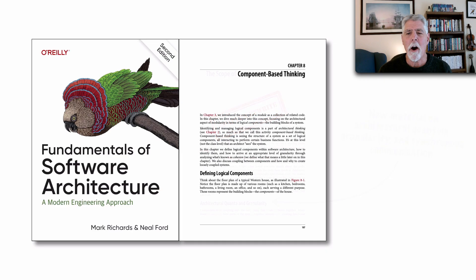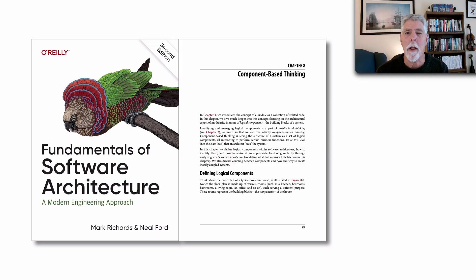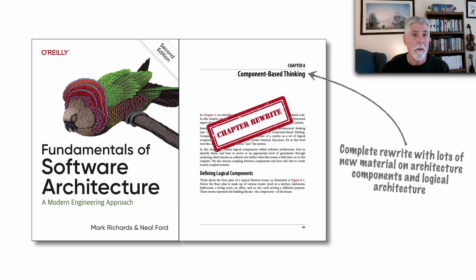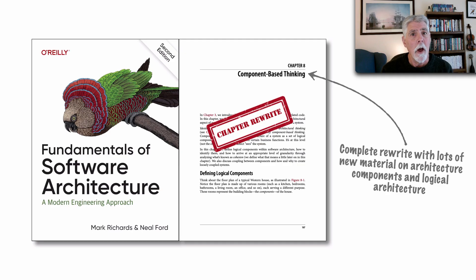Moving on to chapter 8, we shift away from architectural characteristics and start on component-based thinking. This was also a complete chapter rewrite in the second edition, completely restructured with lots of new material on architectural components, identifying components, different techniques for identifying components, a bit more on component coupling, and also new material on creating a logical architecture.